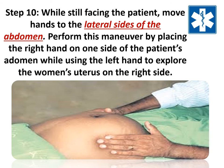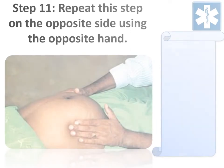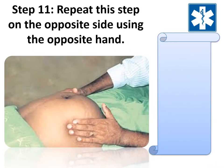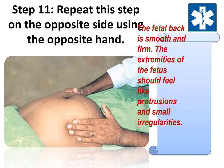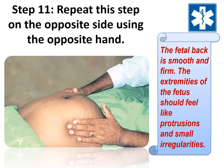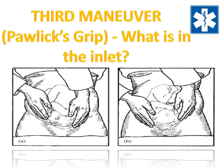For the third maneuver — Pawlik Grip: what is in the inlet? Step twelve: move hands down to the lower pelvic area. Step thirteen: palpate the area just above the symphysis pubis to determine the presenting part. Grasp the presenting part with the thumb and fingers of the right hand. This step identifies the part of the fetus that is above the inlet.